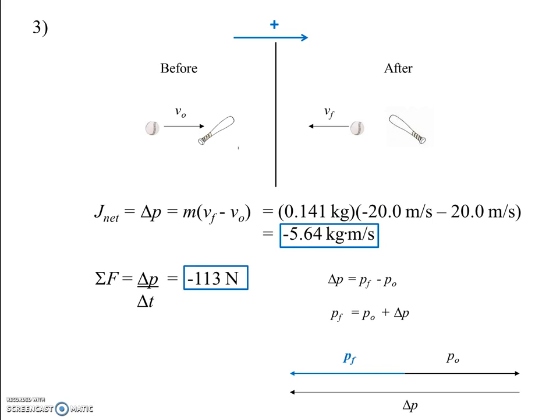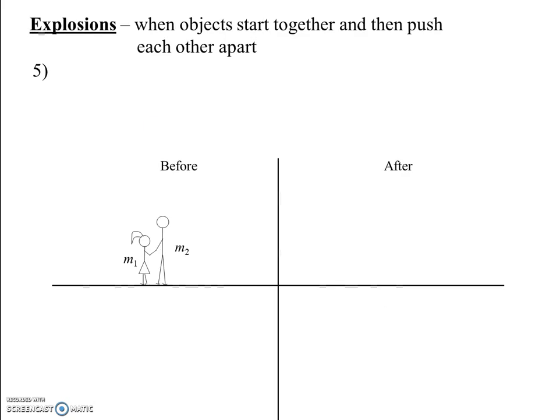And when you go to your physics parties on the weekend, if you want to get in the VIP section, say sigma F equals delta p over delta t. Moving on — we'll skip problem 4, which we'll do in class. Let's turn to problem 5, which describes an explosion. Before we do anything, we want to define an explosion.